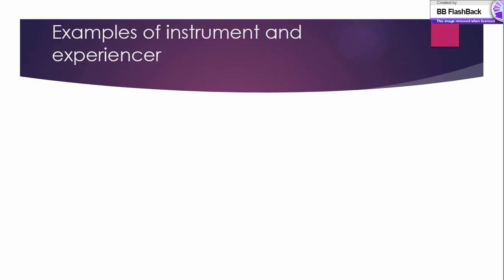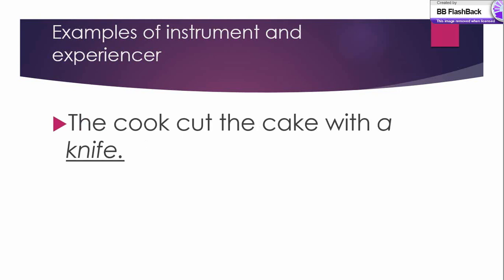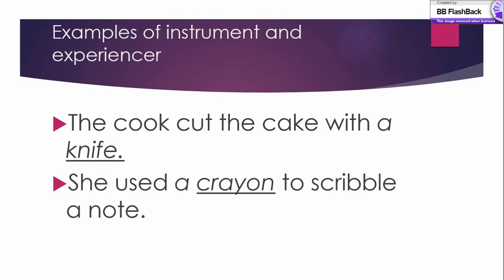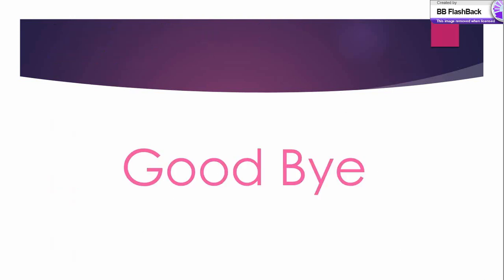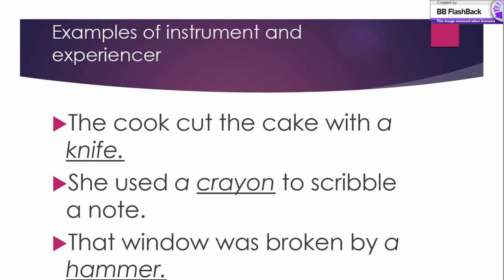Examples of instrument and experiencer. Instrument is any kind of tool you use for performing an action. For example, 'the cook cut the cake with a knife' — knife is the instrument. 'She used a crayon to scribble a note.' 'The window was broken by a hammer' — hammer is the instrument. For the experiencer: 'she knows everything'; 'the boy feels sad'; 'the boy was irritated' — these are all examples of the experiencer, who has a feeling, perception, or state.